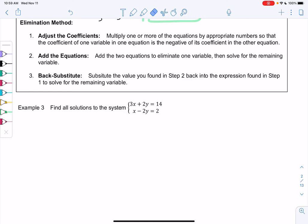So elimination, we will adjust the coefficients. What we're going to do is multiply one or more of the equations by appropriate numbers so that the coefficient of one variable in one equation is the negative or opposite of the coefficient in the other. So if you see in the equation below, we've already done that step. 2x, 2y, and negative 2y are opposites of each other.